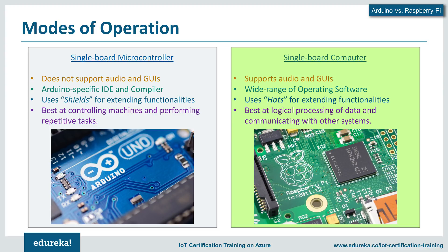The Arduino comes without any operating software — the only software it has is for compiling code to machine level and allowing serial connection for data transfer. This is why it requires less power and could operate faster, as it only needs to compile code and use the chip directly to control any component. Whereas the Raspberry Pi must enable all required layers of software and utilize different programs to make any task happen — which is also why the Pi can multitask while the Arduino can only perform a single task repeatedly.